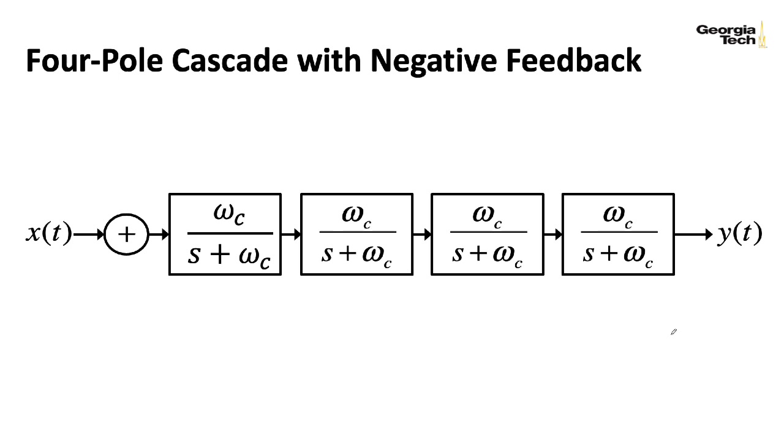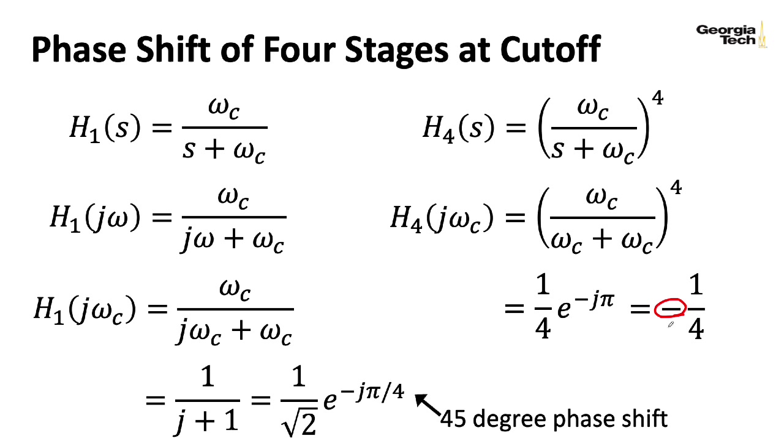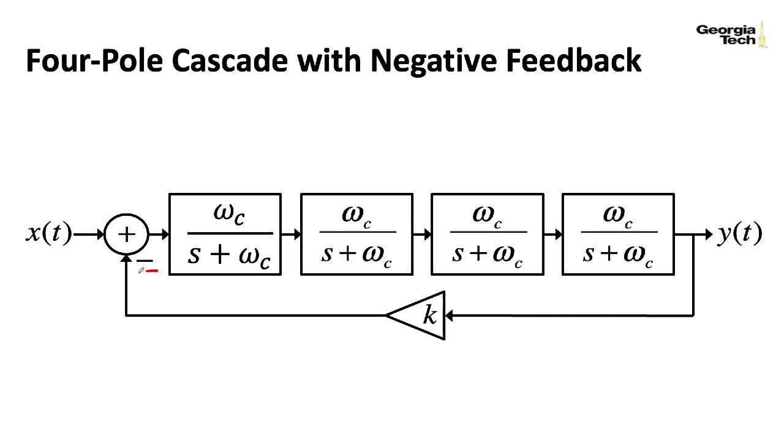What if we were to take the output of this cascade and feed it back to the input with a minus sign? So we have some negative feedback. Well, at that omega-C, those two minus signs will cancel. The 180 degrees phase shift you get from going through four 45-degree phase shift filters, and you get another 180 degrees phase shift from the fact that we have this minus sign here. And 360 degrees of phase shift basically gives you the original back.